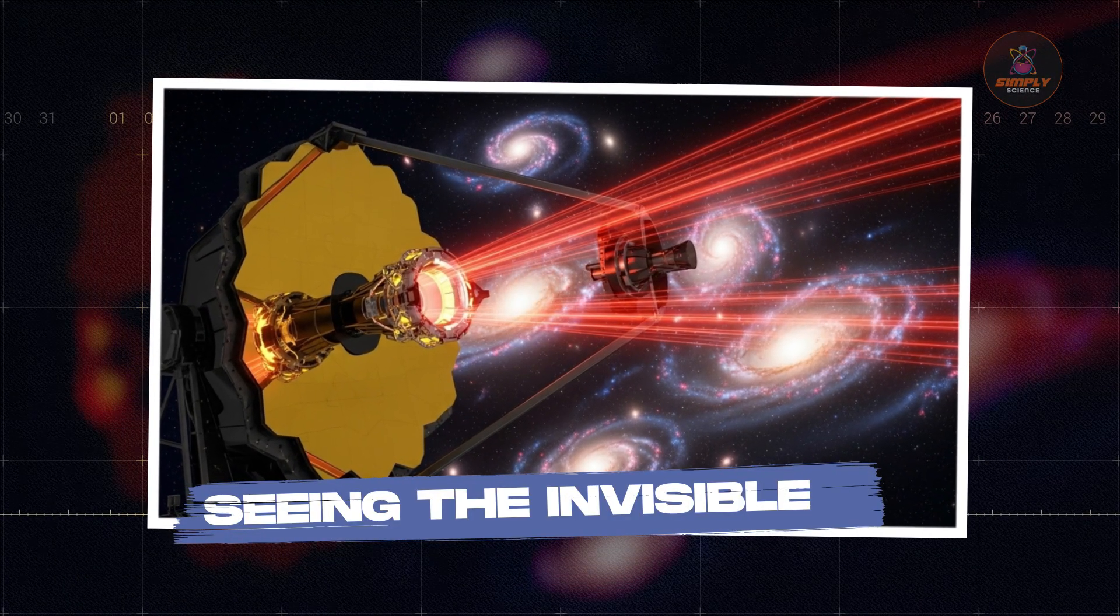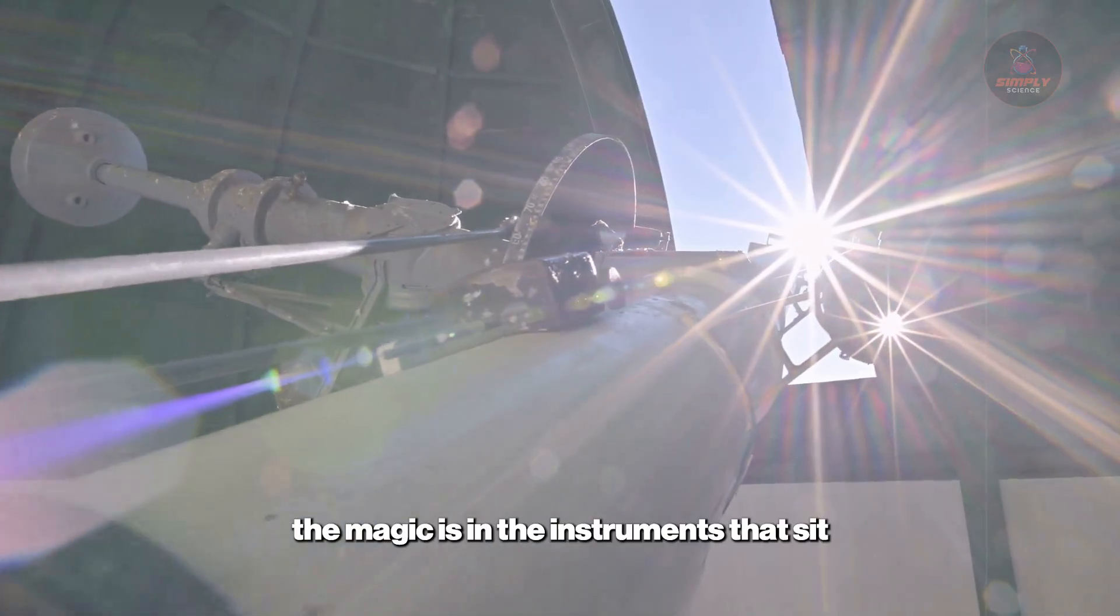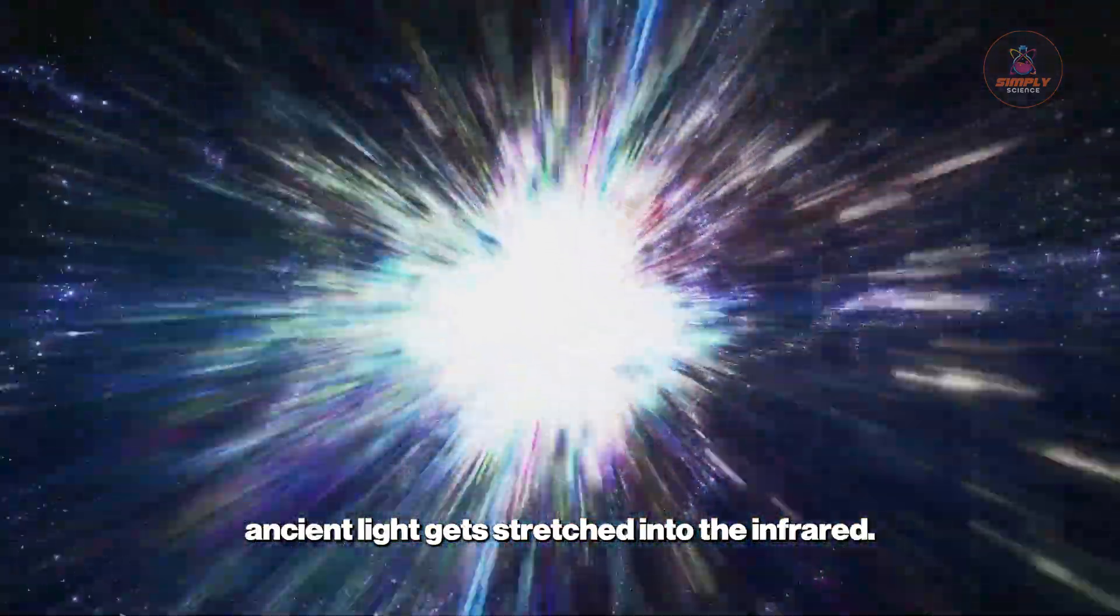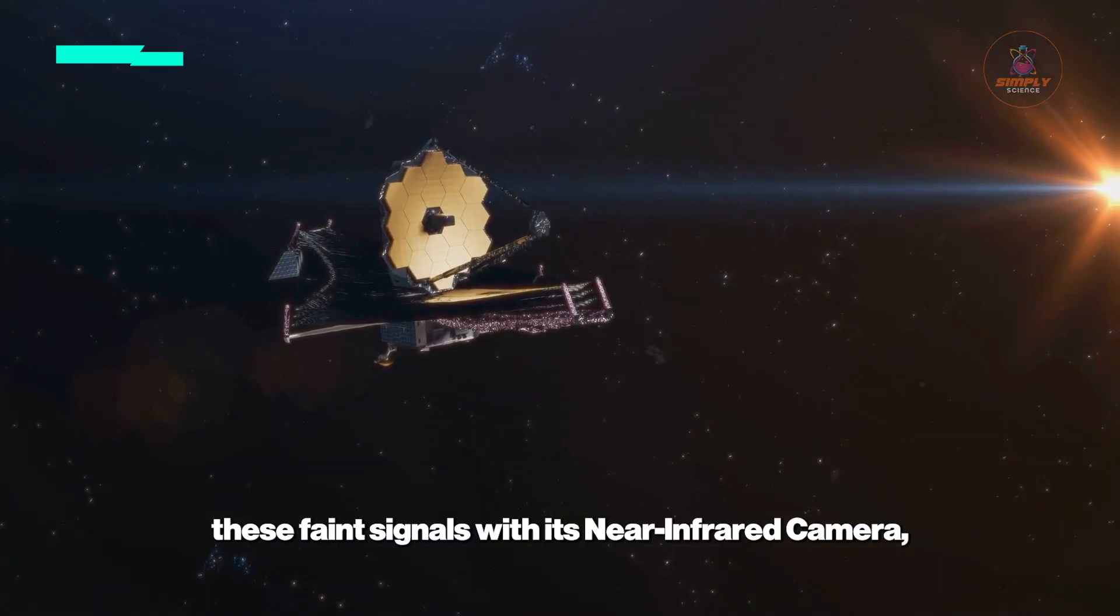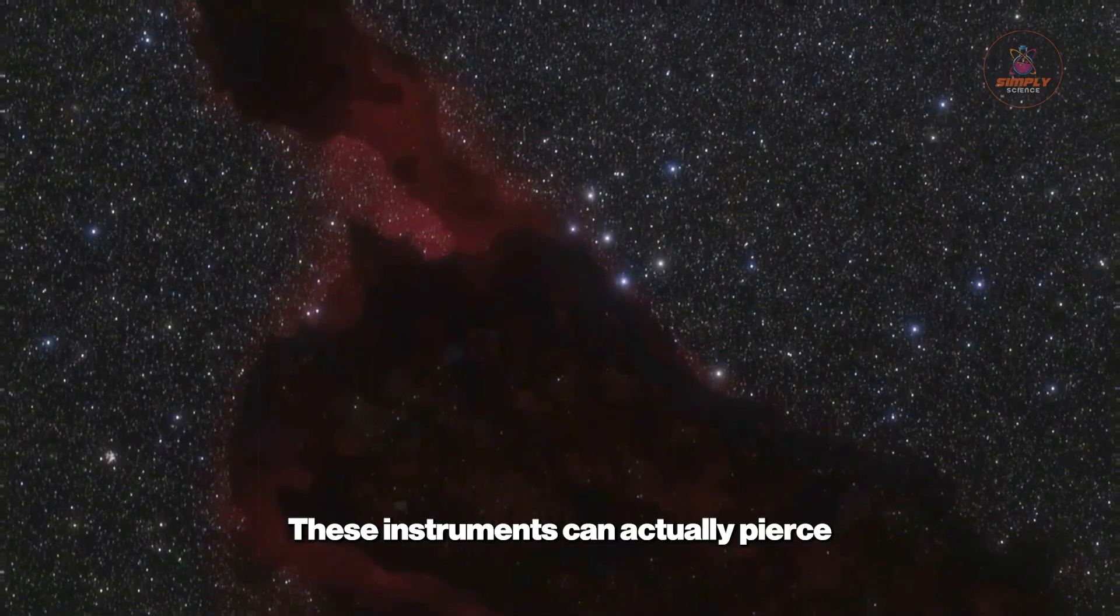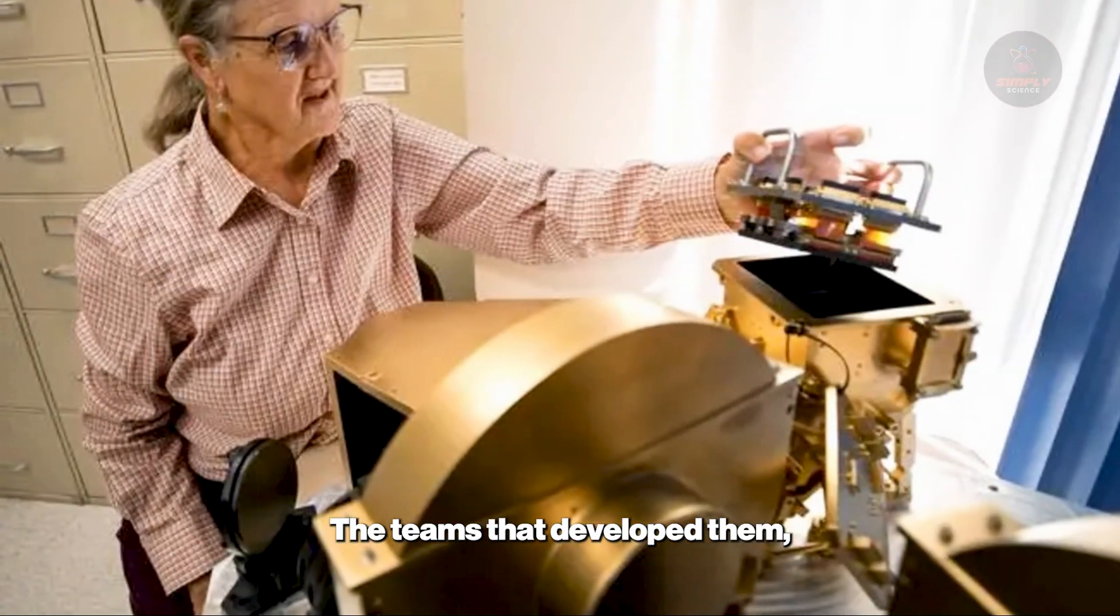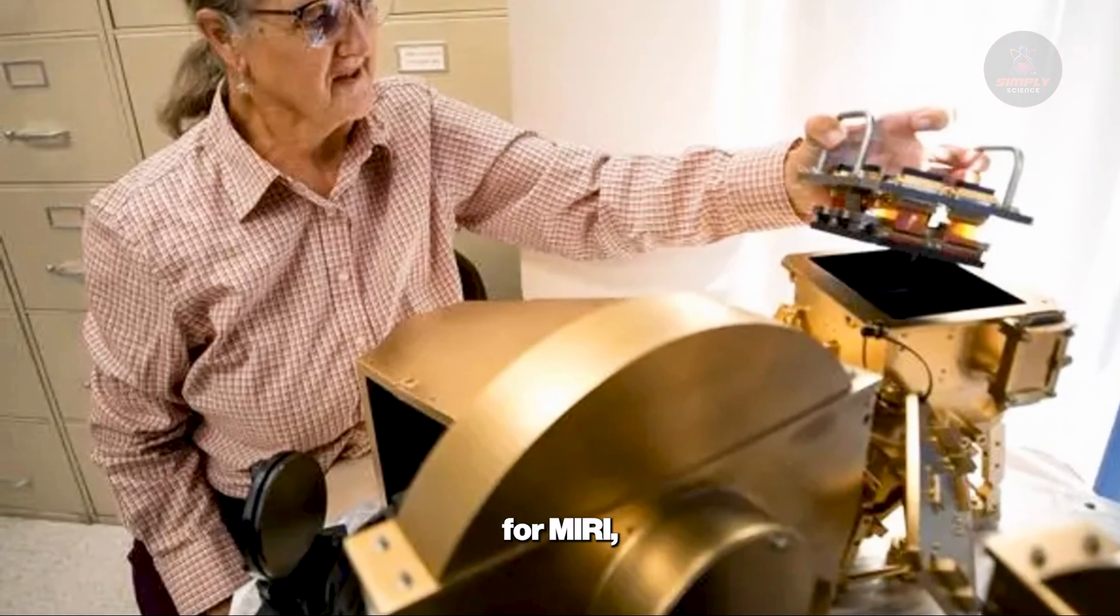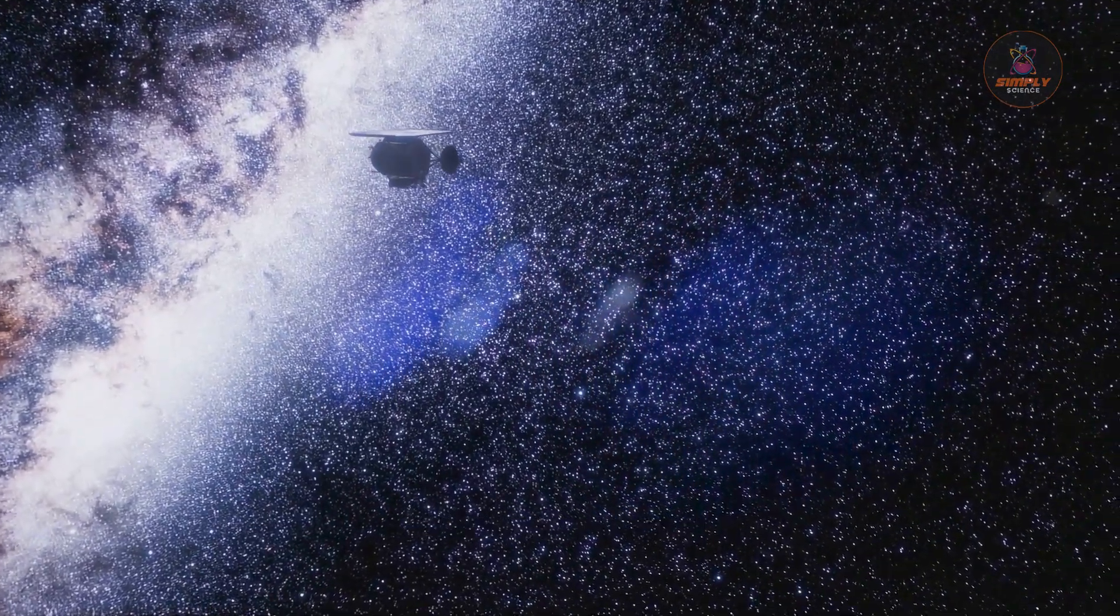So how does a golden mirror translate into seeing back in time? Well, the magic is in the instruments that sit behind it. As the universe expands, ancient light gets stretched into the infrared. Webb was specifically built to follow these faint signals with its Near Infrared Camera, or NIRCam, and its Mid-Infrared Instrument, or MIRI. These instruments can actually pierce through the cosmic dust clouds that blinded Hubble. The teams that developed them, led by principal investigators like Marcia Rieke for NIRCam and Gillian Wright for MIRI, created the tools for a revolution.